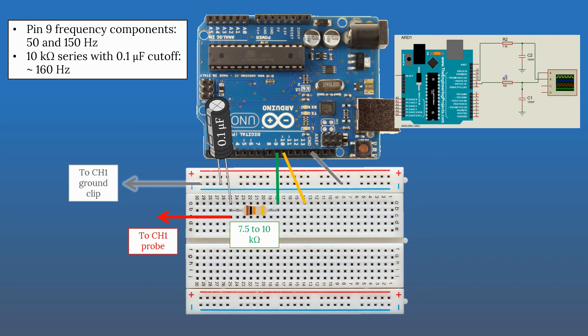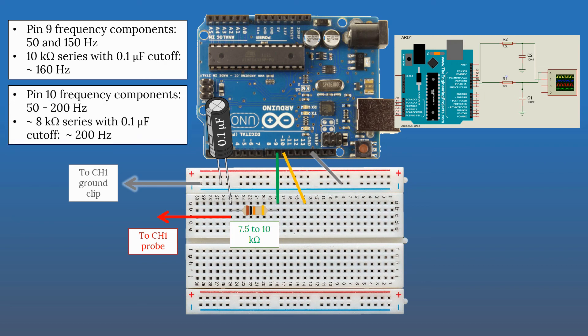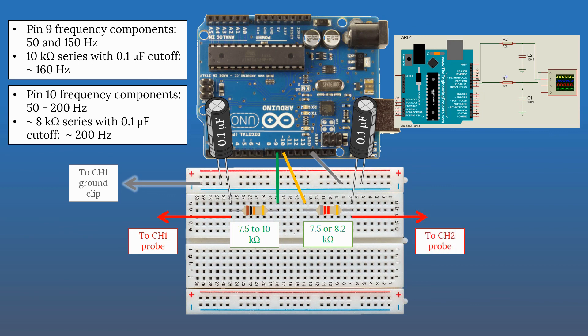We'll apply the same logic for pin 10. Take a wire from pin 10 to the breadboard — there we have frequency components between 50 and 200 Hz. At 8 kΩ with 100 nF, we obtain a cutoff frequency of around 200 Hz. Note that 8 kΩ doesn't exist in the market; you can use 7.5 kΩ or 8.2 kΩ instead. Connect it in series with the capacitor — 100 nF or 0.1 µF, they're the same.